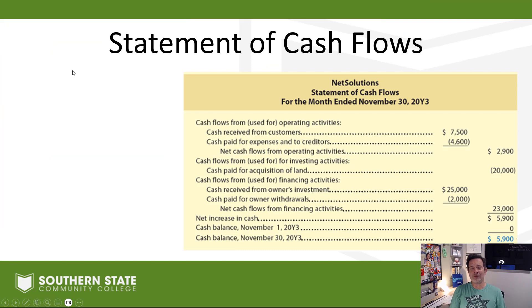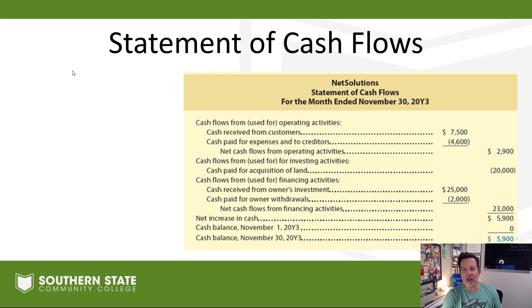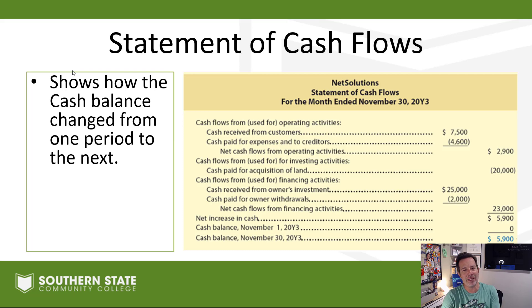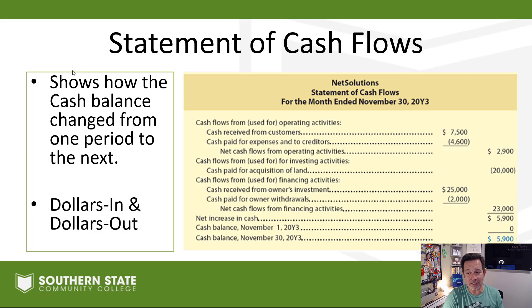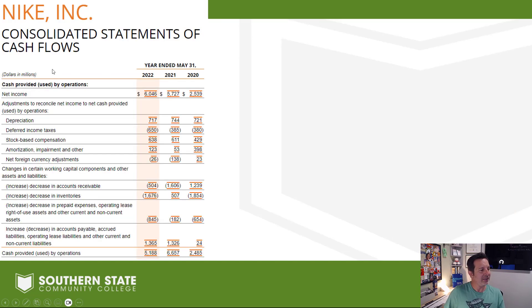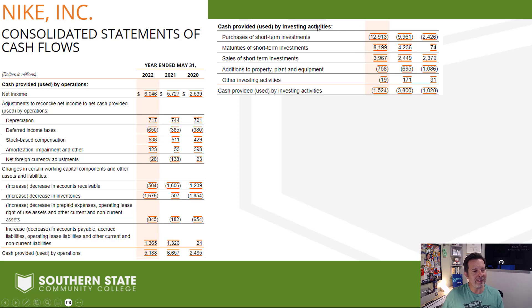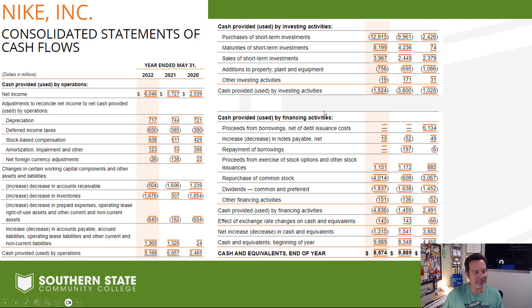Finally, our statement of cash flows - the one financial statement we're not going to do a whole lot with right now. We'll get into it later, maybe in Accounting 1102. All you really need to know right now is it shows how the cash balance changes from one period to the next - where those dollars came from and where they went. Here's Nike's cash flow statement. You can see cash provided by day-to-day operations, cash provided or used by investing activities and financing activities, cash at the beginning of the year, and then cash at the end of the year right there at the bottom.